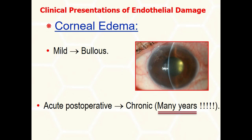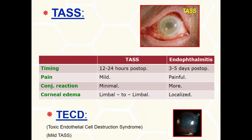Post-surgical endothelial cell loss increases up to four times the normal rate in unoperated eyes and for at least 10 years, so corneal decompensation can occur many years after surgery. Toxic anterior segment syndrome is an infrequent manifestation of endothelial cell damage. Limbus-to-limbus corneal edema plus mild inflammatory symptoms differentiate it from acute post-operative infectious endophthalmitis.